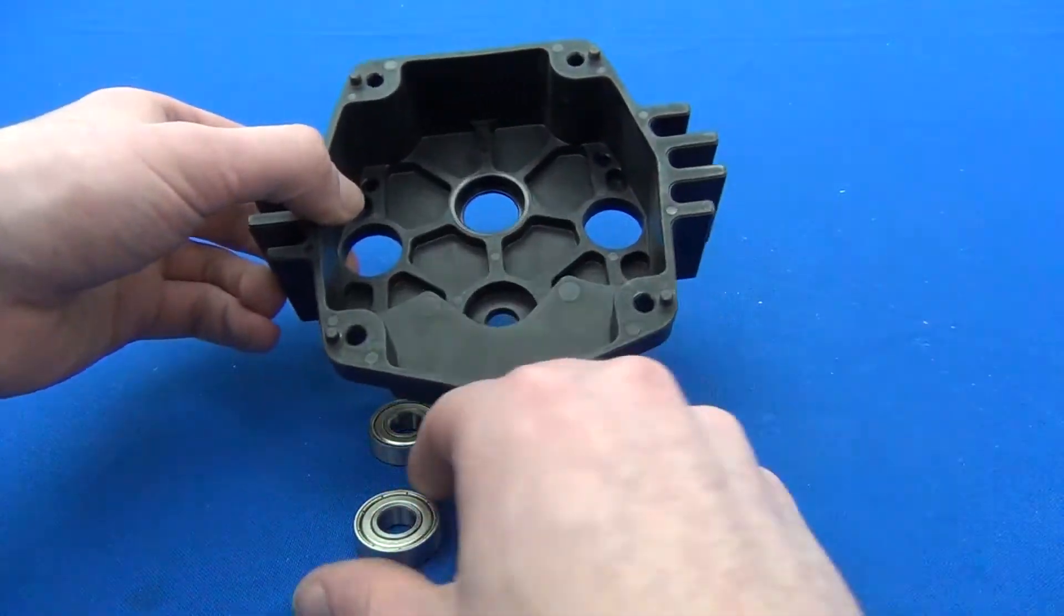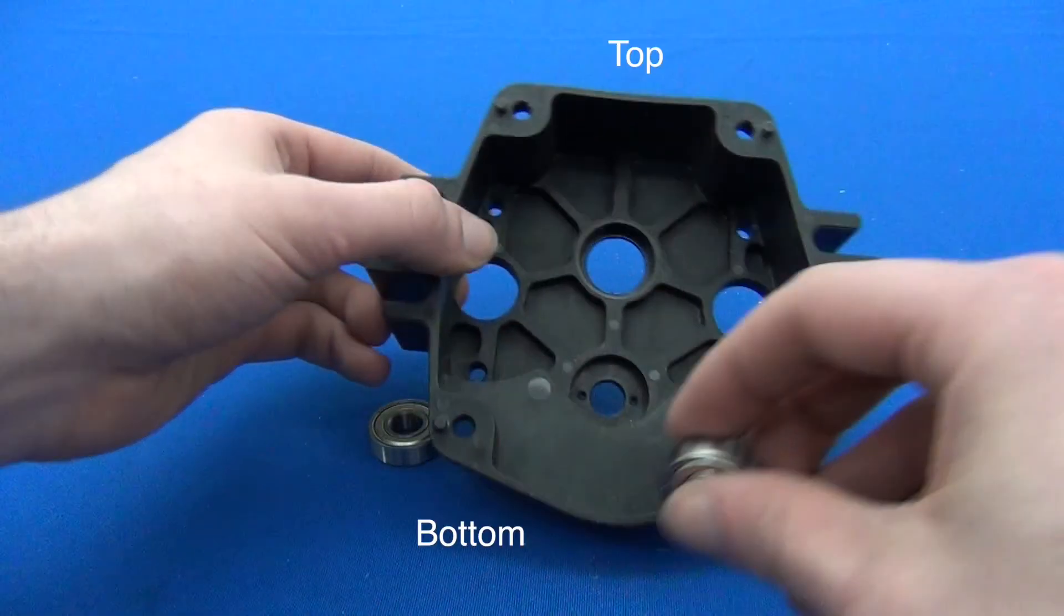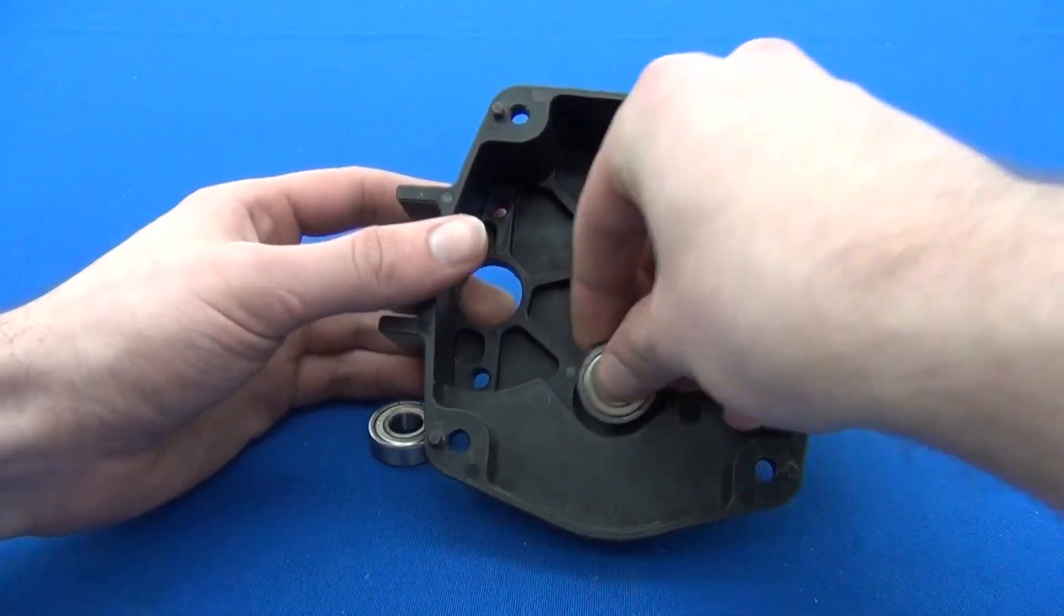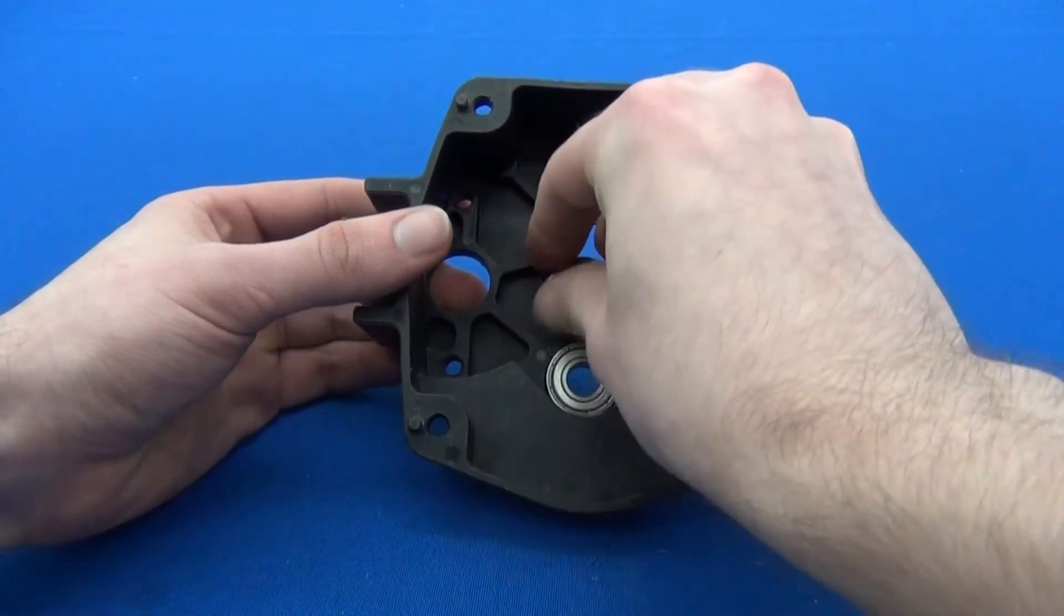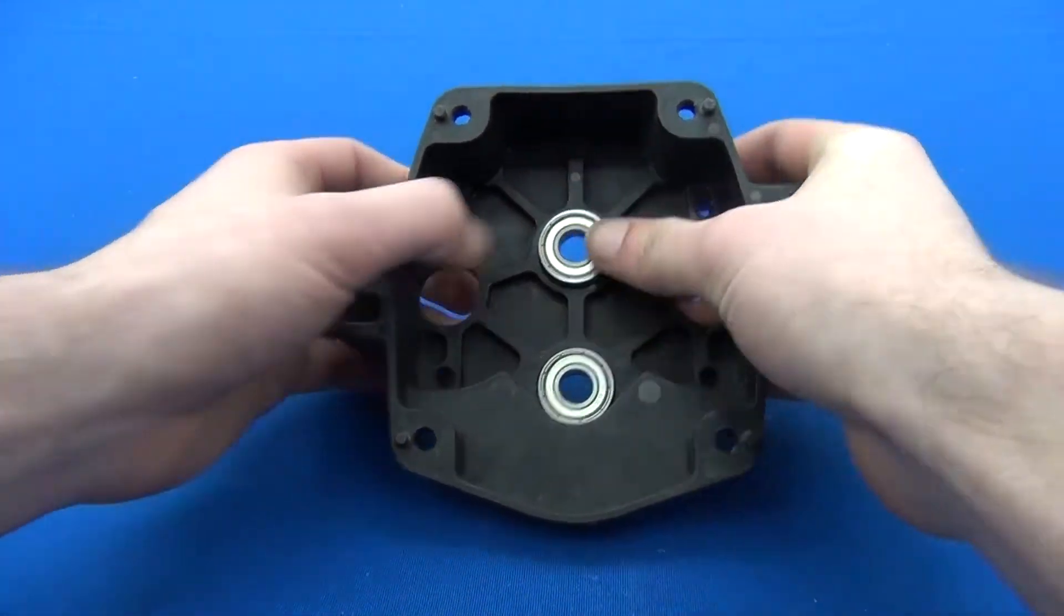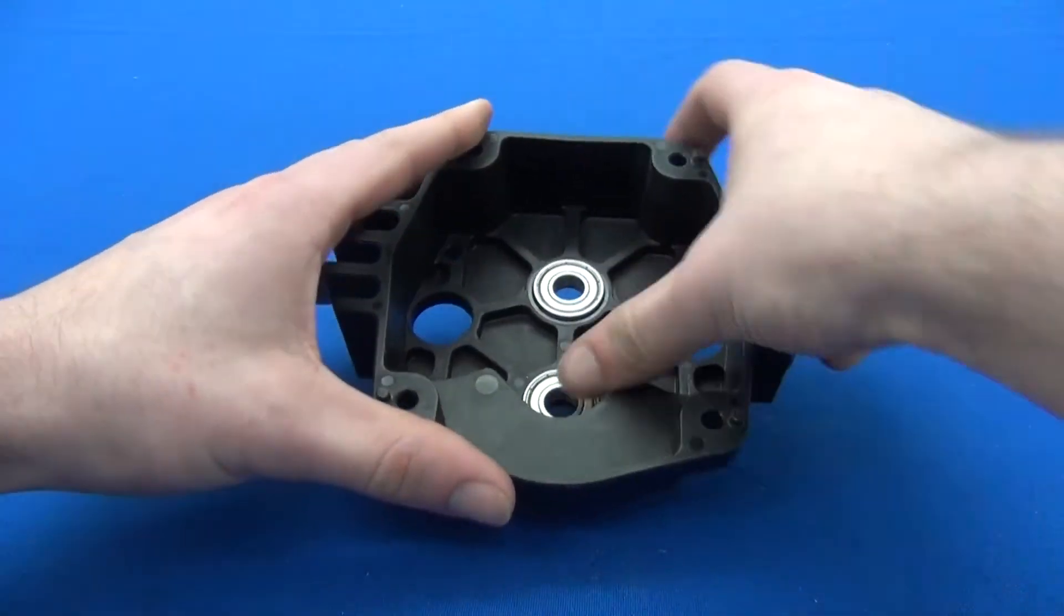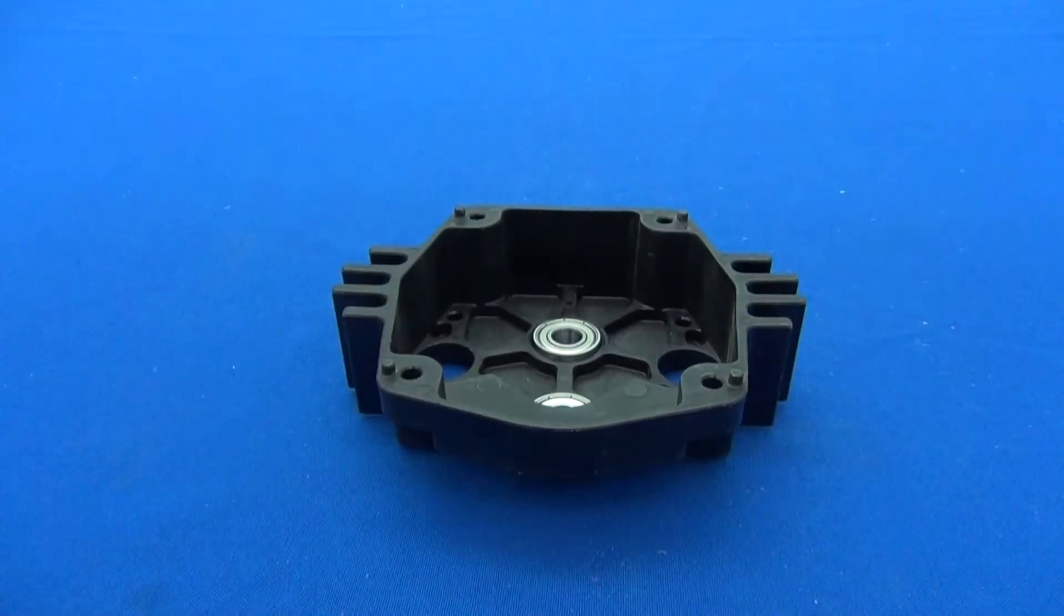Before we go any further, let's establish something that might help us out for the assembly. The flat part is the top, the curved edge is the bottom. These two shielded bearings will need to go into the two vertical center holes of the housing. Sometimes they can press in easily with your fingers. Sometimes they might need slight convincing.